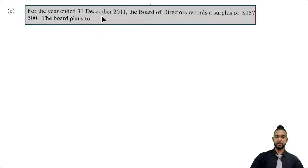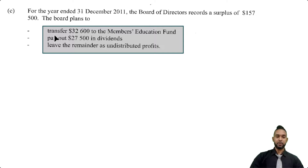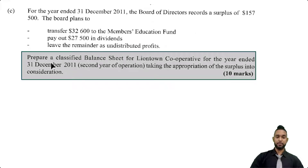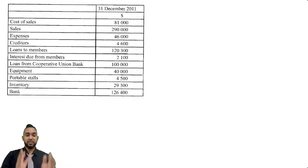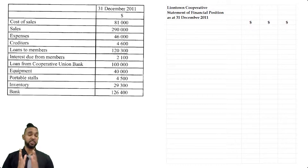For the year ended 31st December 2011, the board of directors records a surplus of $157,500. The board plans to transfer $32,600 to the members education fund, pay out $27,500 in dividends, and leave the remainder as undistributed profits. They want us to prepare a classified balance sheet for Liontown Cooperative for the year ended 31st December 2011, taking the appropriation of the surplus into consideration. That's 10 marks.